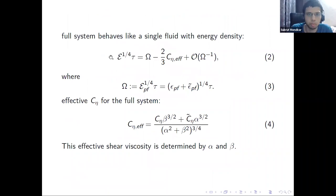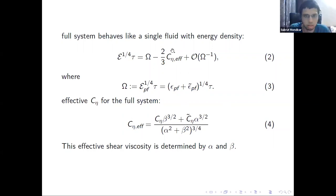We can obtain a hydrodynamic expansion for the full system energy density in terms of a corresponding dimensionless time variable. By comparing this to the subsystem expressions for the energy densities, we can read out an effective specific viscosity C_{eta,eff} for the full system. This effective viscosity is expressed in terms of alpha-star parameters, which characterize the different curves on the attractor surface.